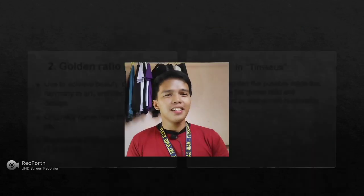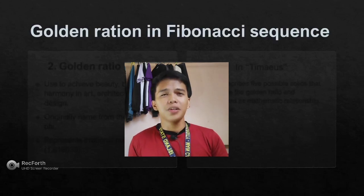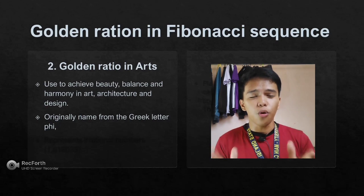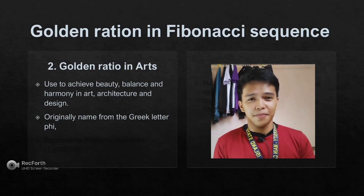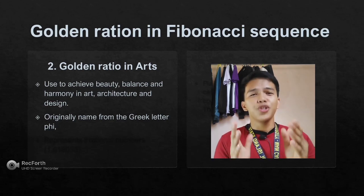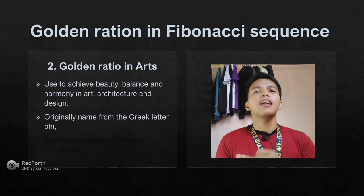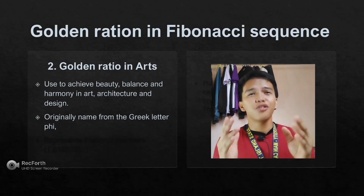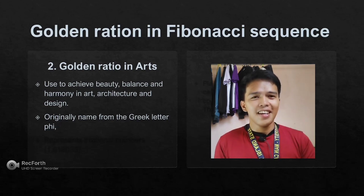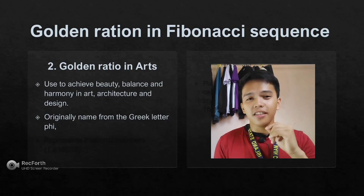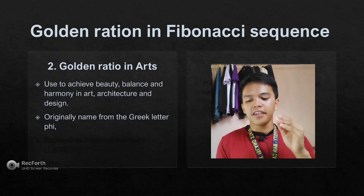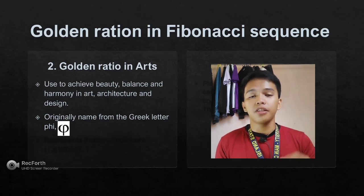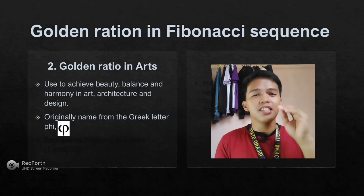The second type is golden ratio in arts. Most famous artists use the golden ratio or spiral ratio in their creative works. Golden ratio in arts is usually used to achieve beauty, balance, and harmony in art, architecture, and design. It is originally named by the Greeks as the golden section, golden proportion, or divine proportion, denoted by the Greek letter phi, which represents an irrational number.